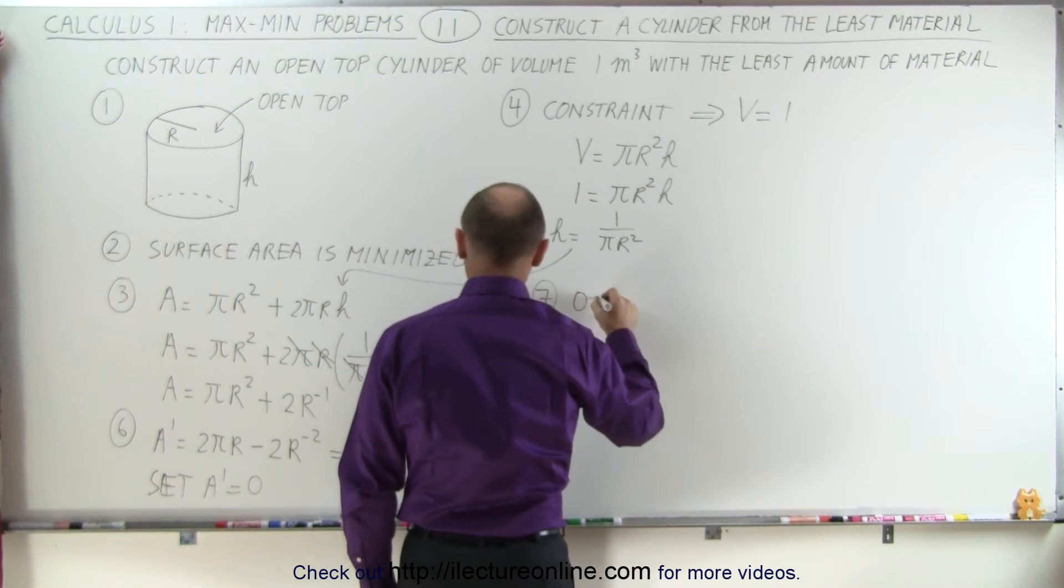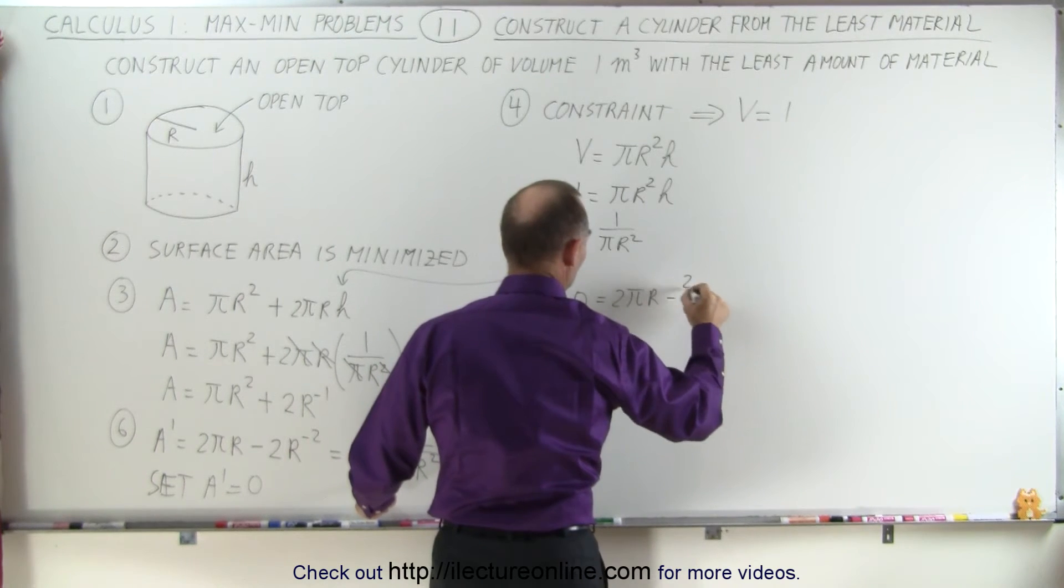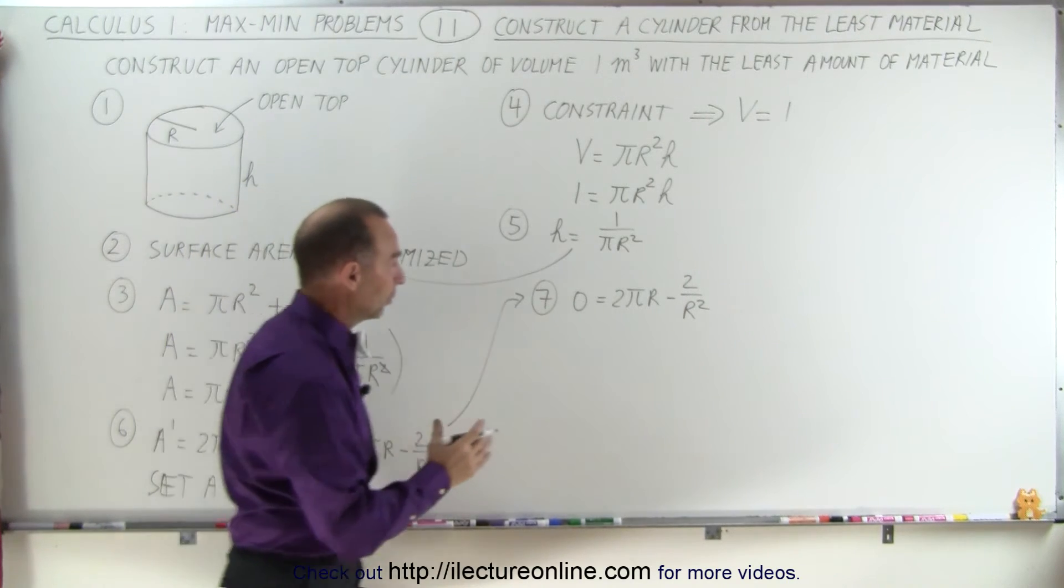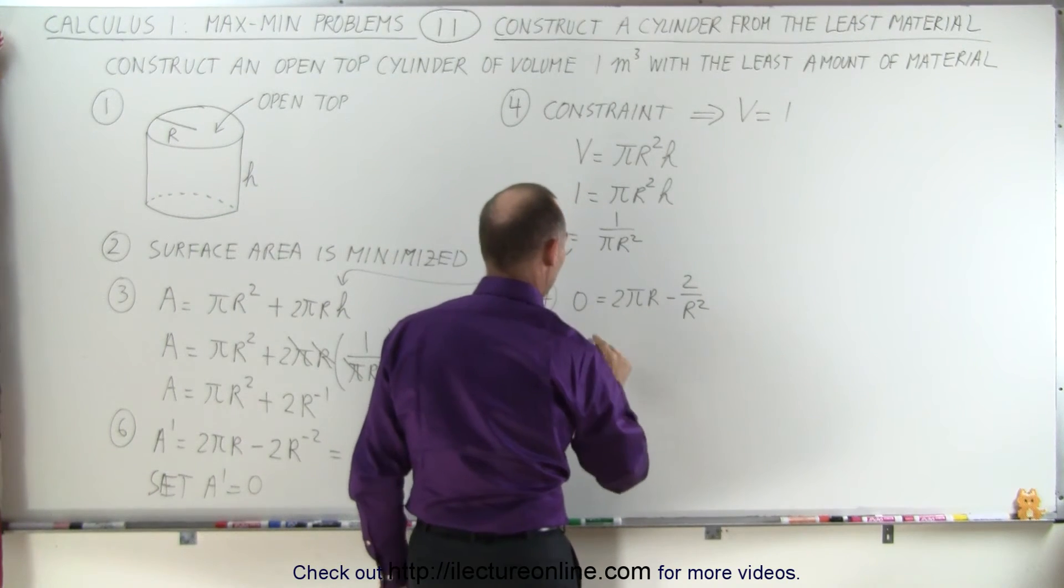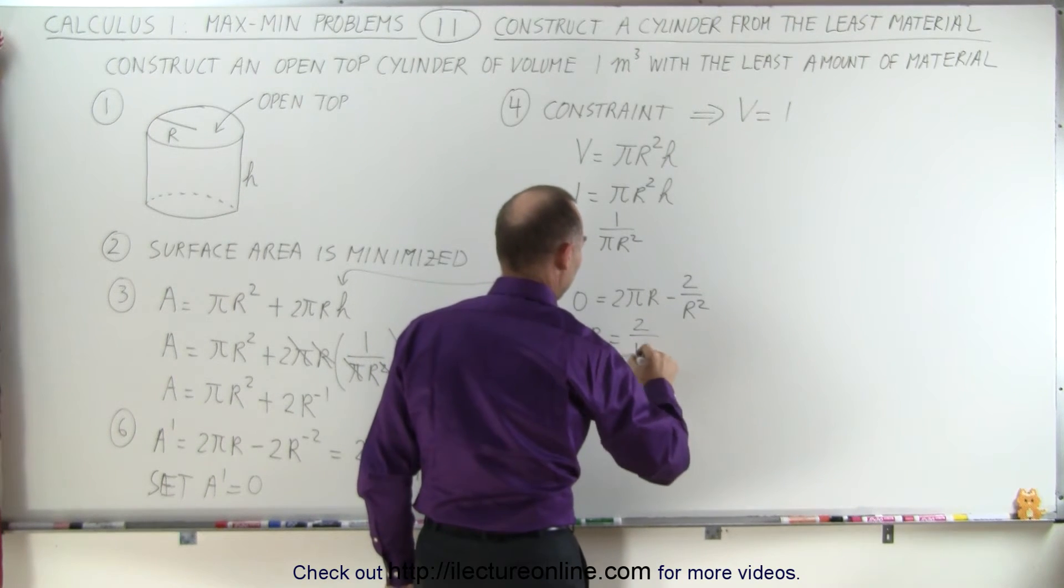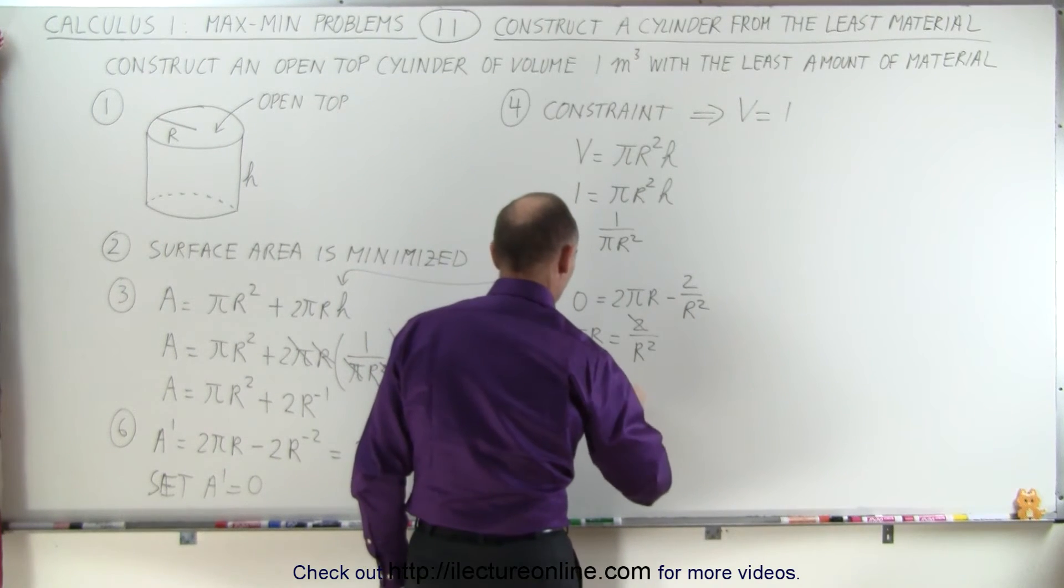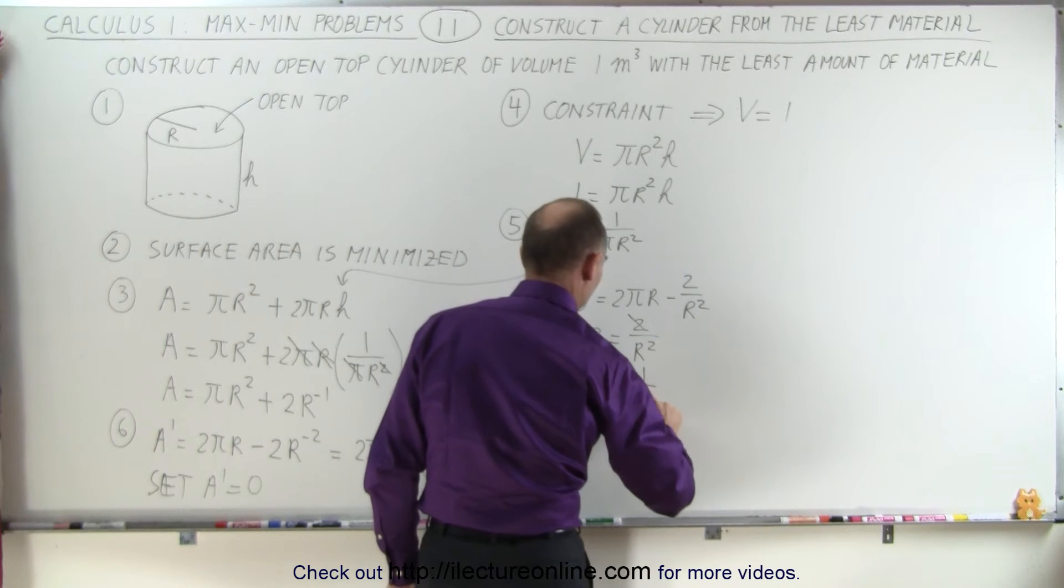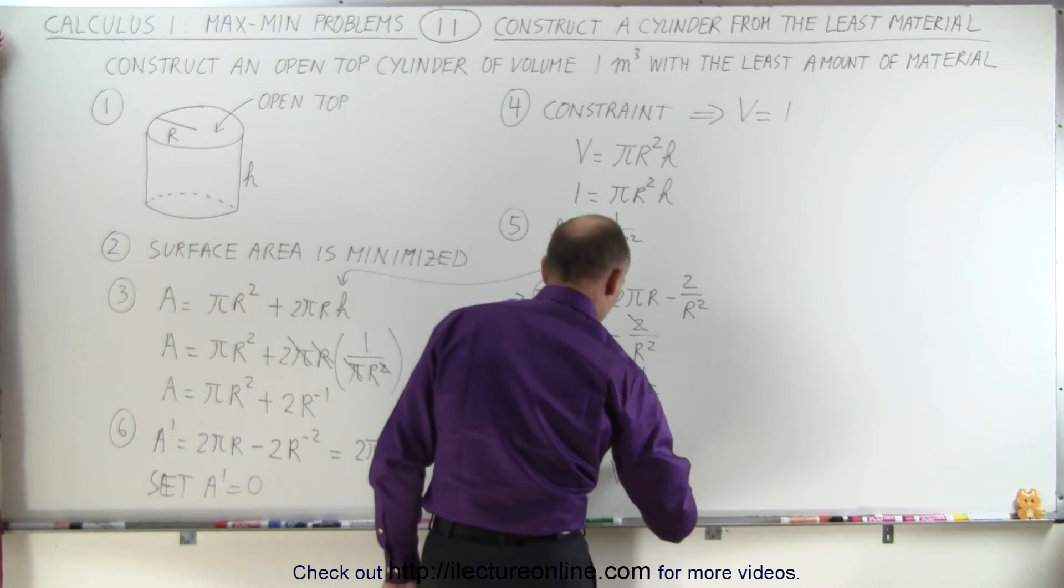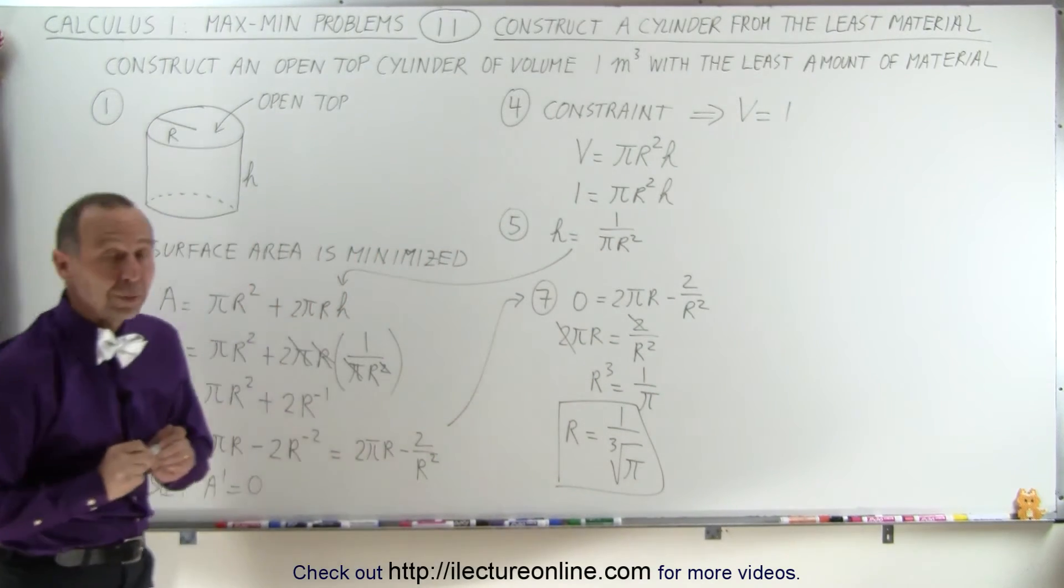Step seven, we have 0 is equal to 2 pi r minus 2 over r squared. And we have to solve that for r. So we can bring this to one side. So we have 2 pi r is equal to 2 divided by r squared. And here we can see that the 2's cancel out, so r cubed equals 1 over pi, or r is equal to 1 over the cube root of pi. That's kind of a strange number, but that's probably right.